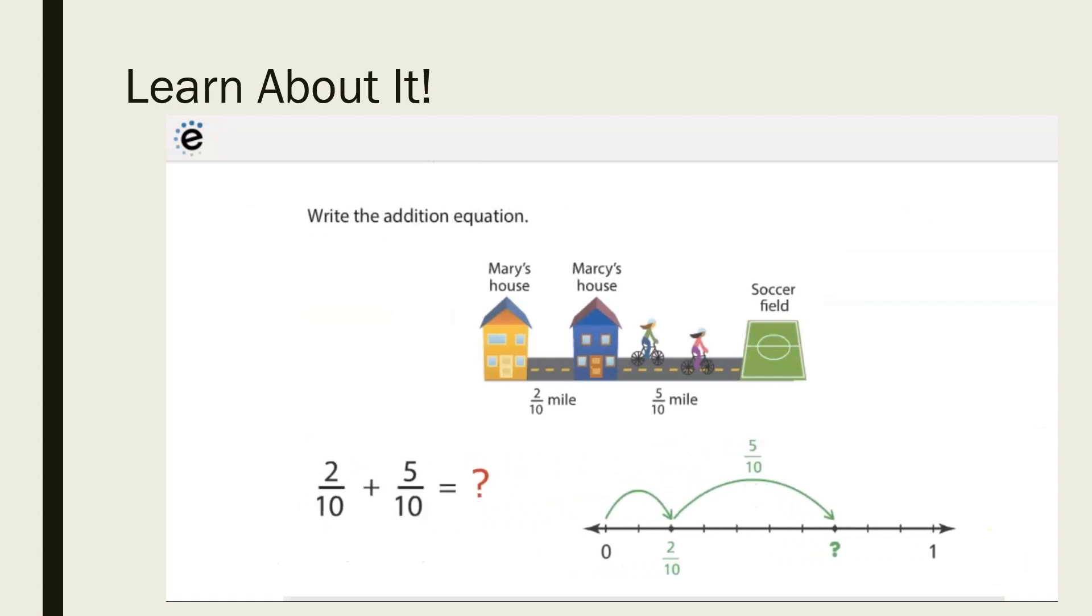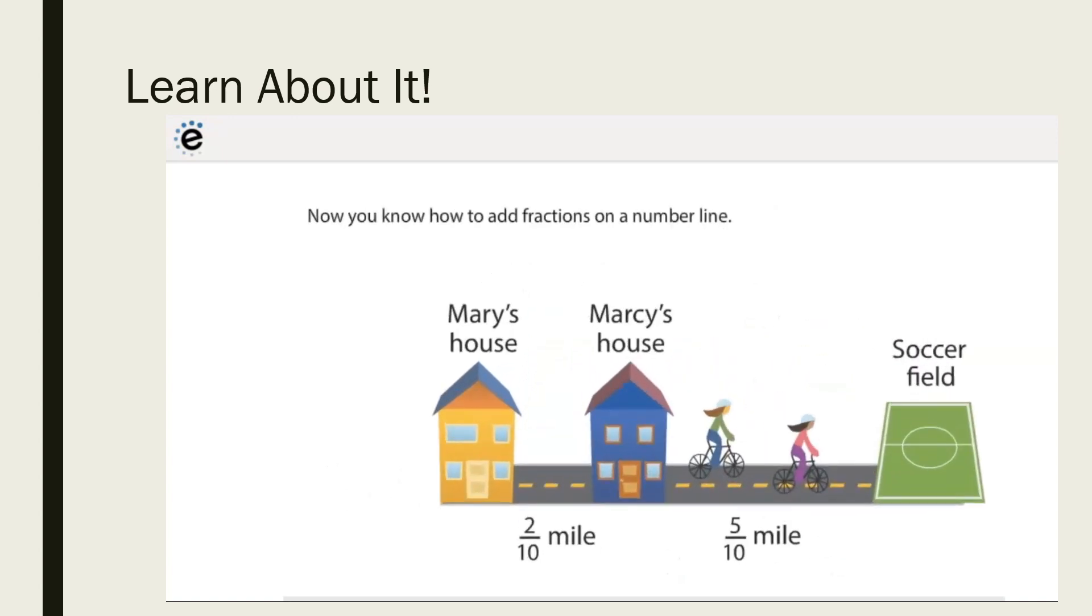Write the addition equation. Add the numerators. Write the sum over the like denominator. What is the distance from Mary's house to the soccer field? The distance from Mary's house to the soccer field is seven-tenths mile. Now you know how to add fractions on a number line.